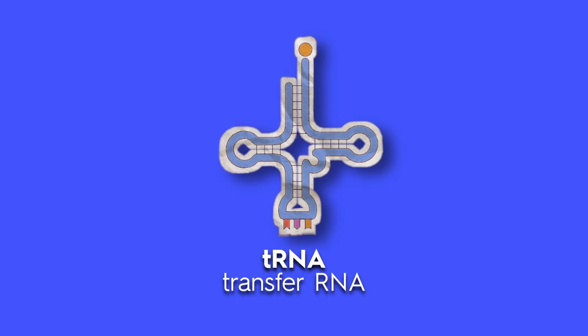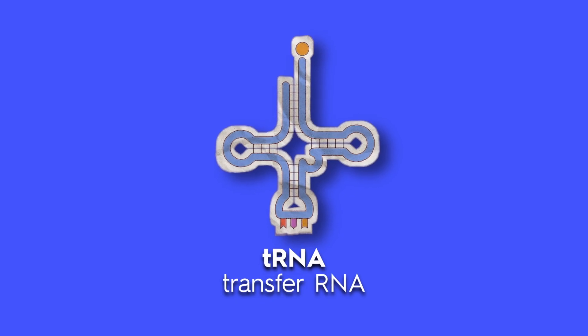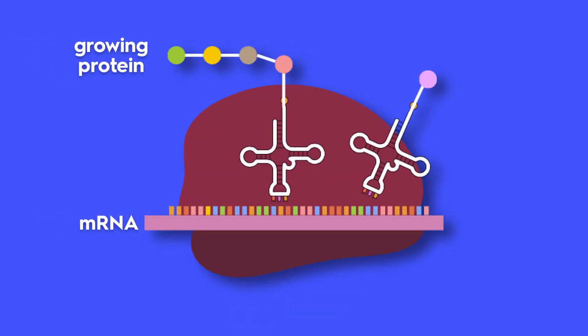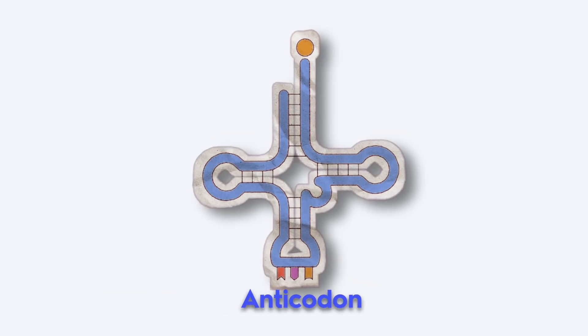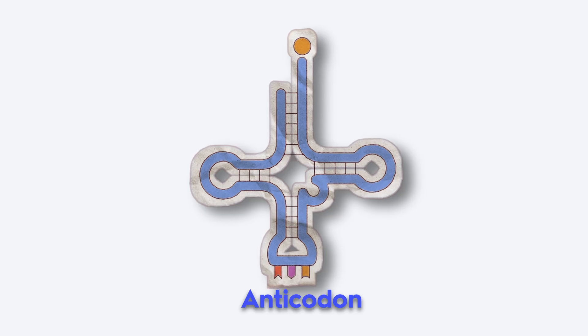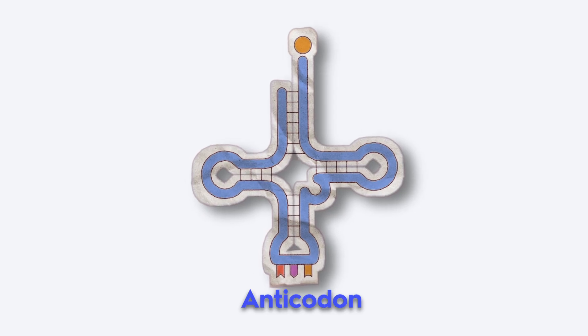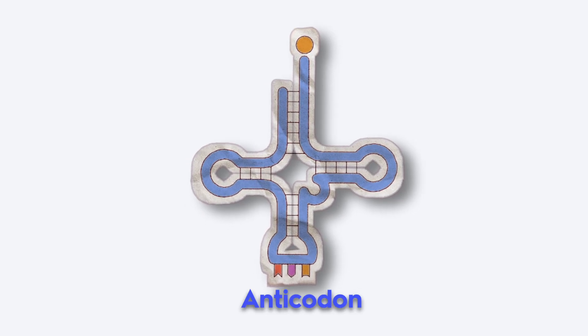tRNA, or transfer RNA, acts like a delivery worker. It brings the right amino acids to the ribosome based on the mRNA's code. Each tRNA has an anticodon that pairs with a codon on the mRNA, ensuring the correct amino acid is added to the growing protein chain.